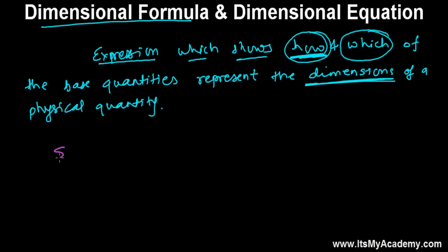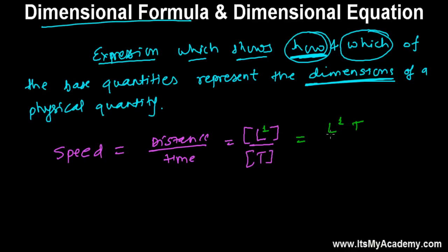Let's say, as we took the example of speed in the previous relation, that speed is distance over time. That means distance means length, so length over time equals to length having power 1 and time having power minus 1. And if you associate mass also, generally we associate mass, length and time while representing the dimension. So M^0, L^1, and T^-1.